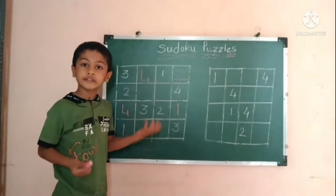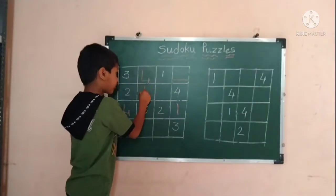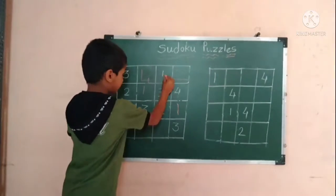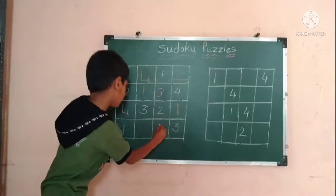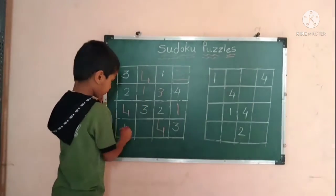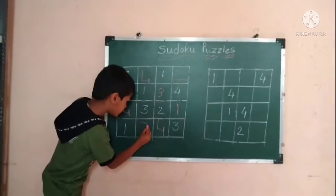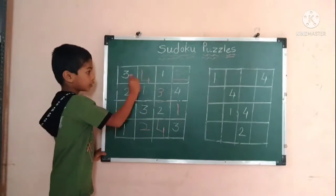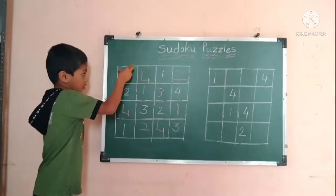Two and four — which number is missing? One. One and three. One, two, three — which number is missing? Four. One, three, four — which number is missing? Two. No number can be repeated in a row. No number can be repeated in a column.